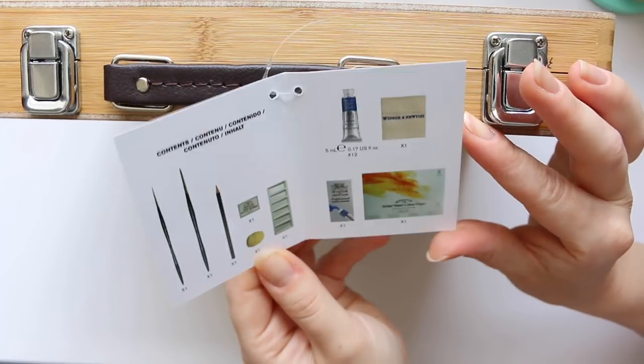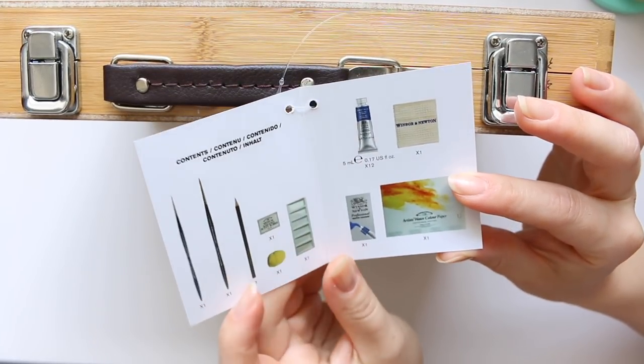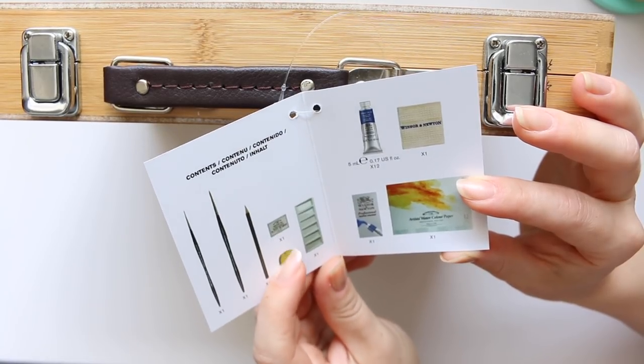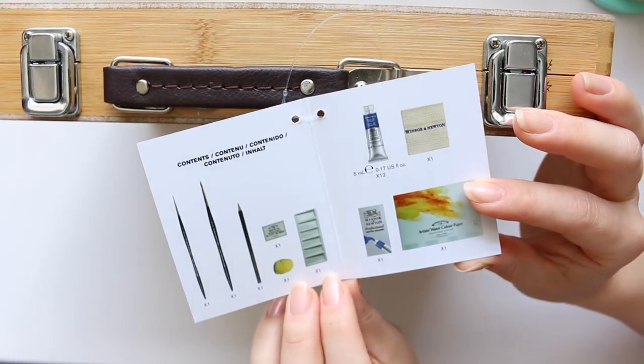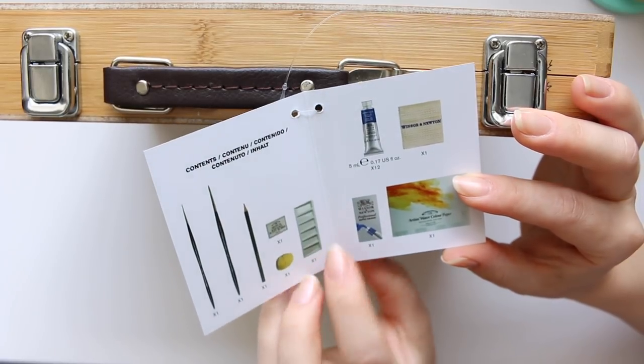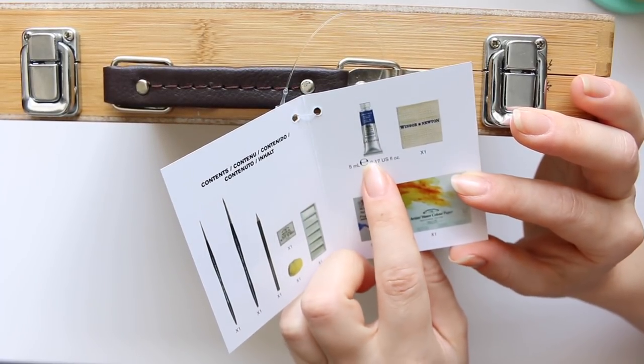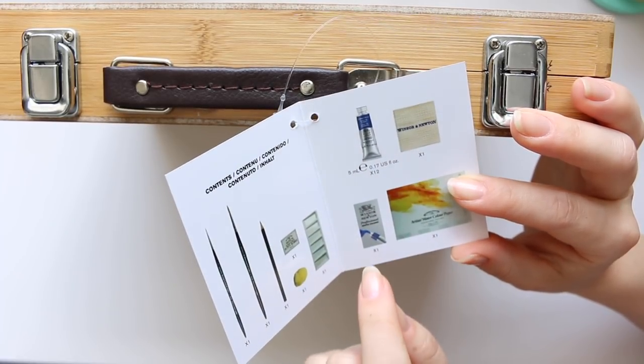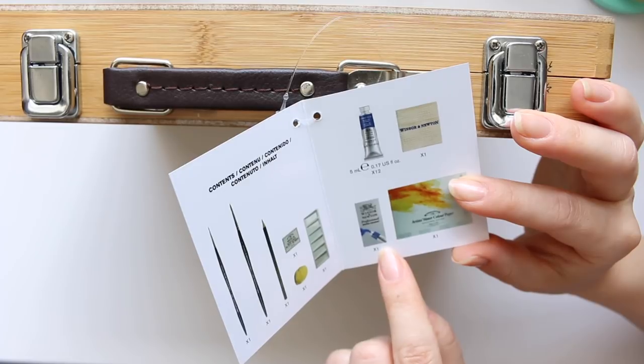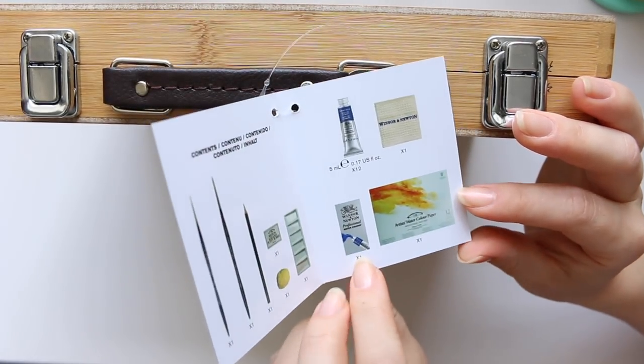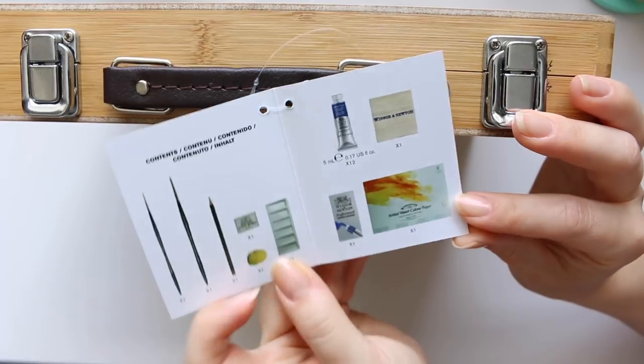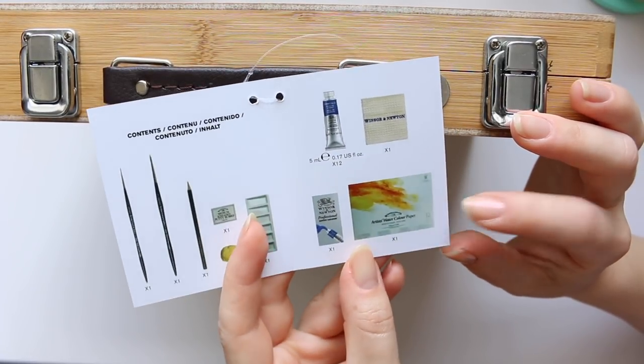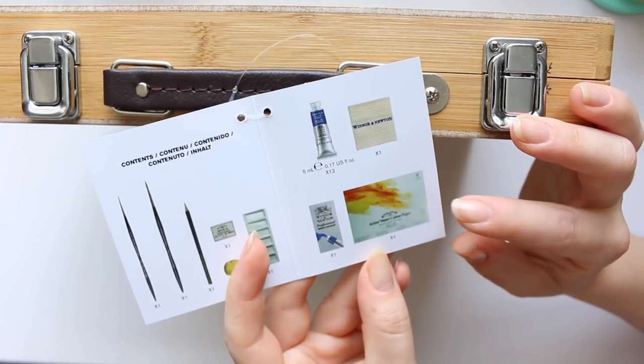There are two brushes, pencil, little sponge, putty rubber, then there is a ceramic tray, there are 12 tubes of watercolor, there is a little cloth and a little kind of leaflet I suppose to tell you of all the colors that are available, and there is this paper which is included.